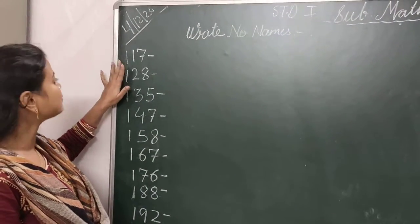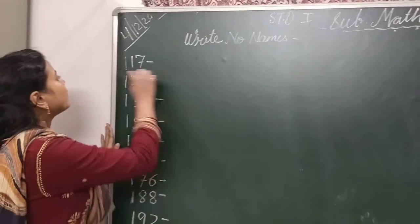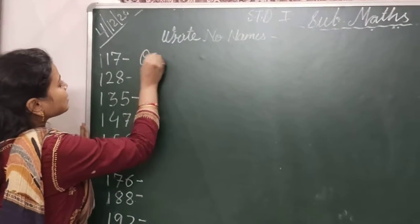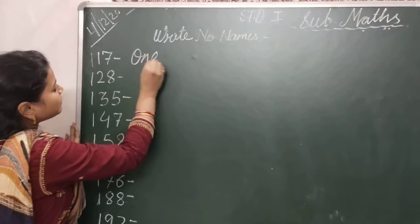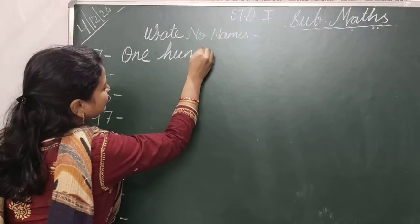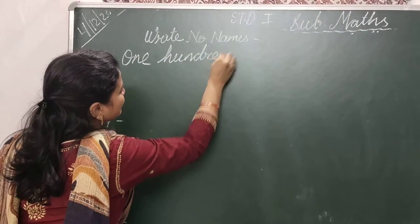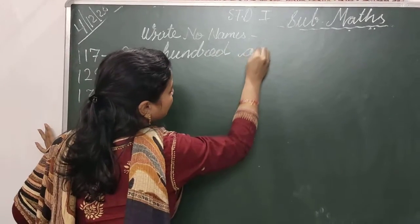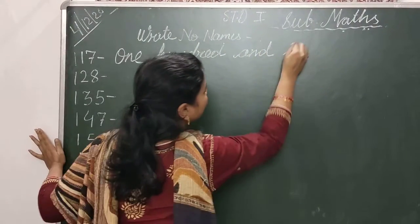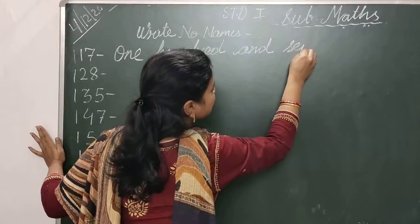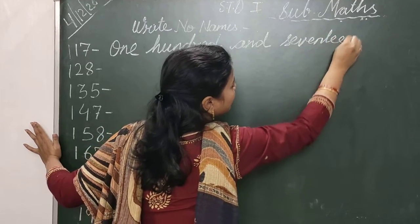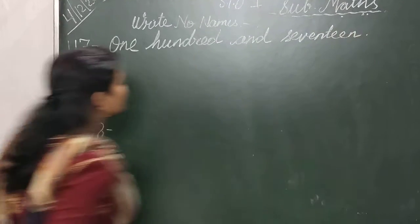Your first number is 117. Okay? So O-N-E, one hundred, H-U-N-D-R-E-D, and seventy, S-E-V-E-N-P-E-N. One hundred and seventeen. Okay children?